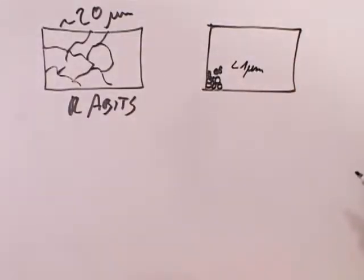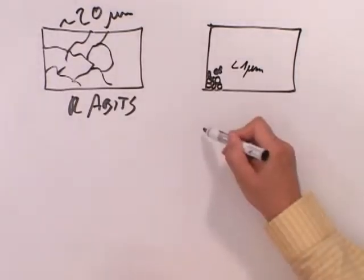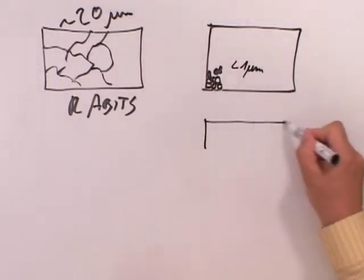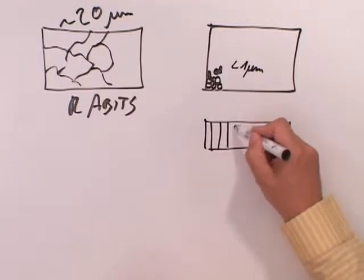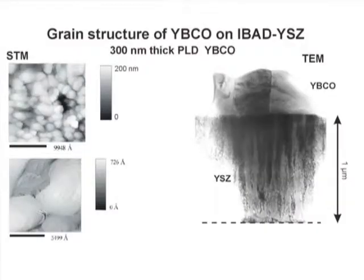Nevertheless, if you look at the cross-section of these IBED tapes, they have columnar growth from the bottom of the substrate to the surface of the film.